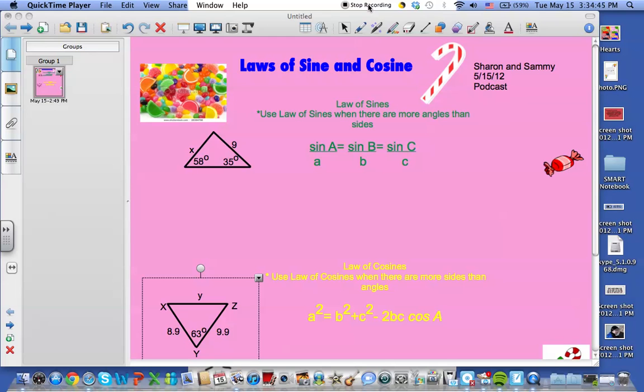We should use the law of sines when there are more angles and sides, and the formula is sine capital A, which stands for the angle, over small a, which stands for the side, is equal to sine B over B, and that's also equal to sine C over C.